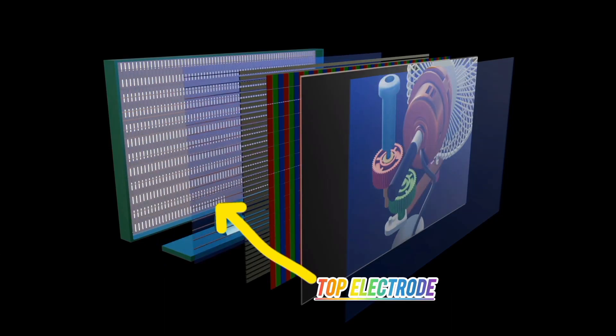Then we have top electrode. This is a transparent electrode layer.